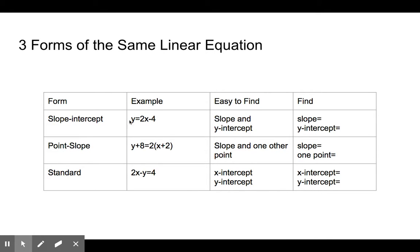We can use the slope-intercept form for that as well, but today we're going to learn a very easy way of using the point-slope form. We're going to be able to look at an equation in point-slope form and from that find the slope and one other point on that line, which will help us graph it.